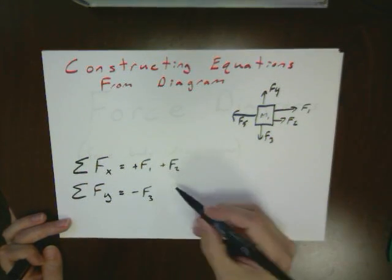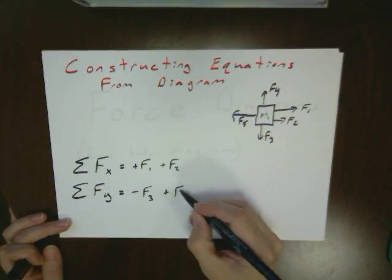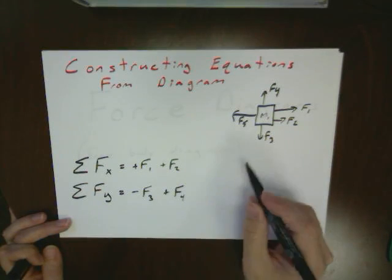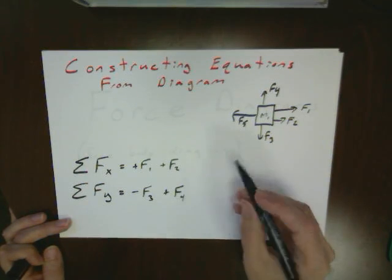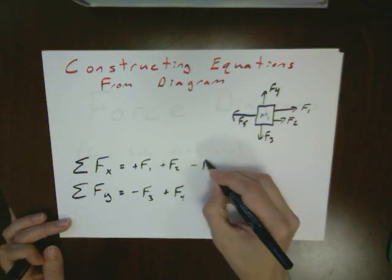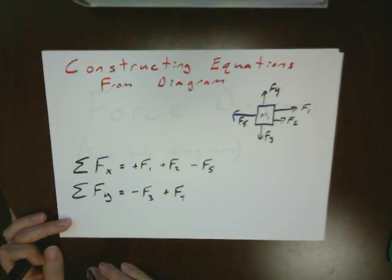When we come to f4, that's up, so that's going to give us plus f4. And then our last one, our force 5 here, is in the negative x direction because that's pointing to the left.